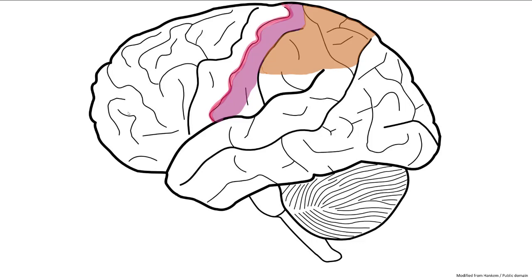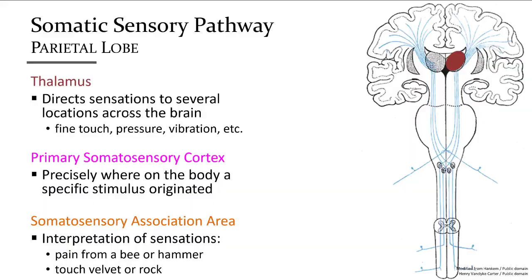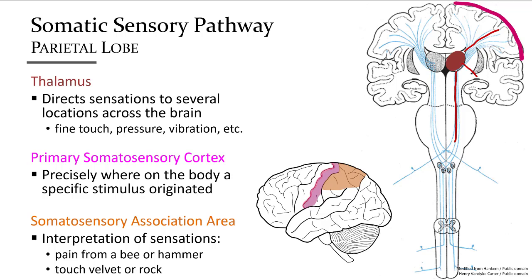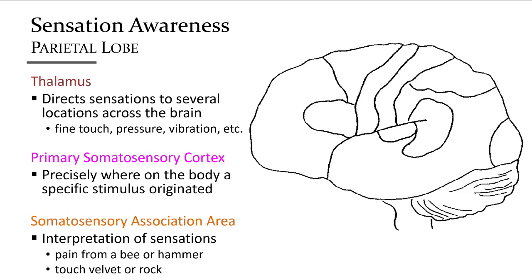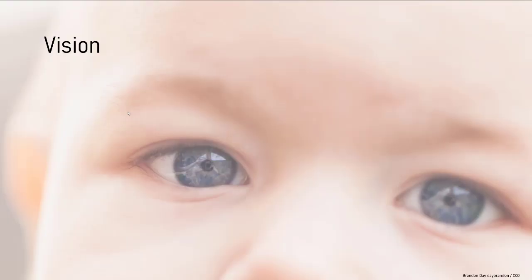Once sensations of touch, pressure, pain, temperature, and body position arrive at the primary somatosensory cortex, they are processed in the somatosensory association area along the posterior superior border. This region uses life experiences and memories to evaluate what you're touching and establish meaning — for example, discerning between a nickel and a button just by feel. Sensory input arrives at the thalamus, directed to the primary somatosensory cortex and also to the basal ganglia, cerebellum, and other regions. The somatosensory association area then makes sense of the incoming information.